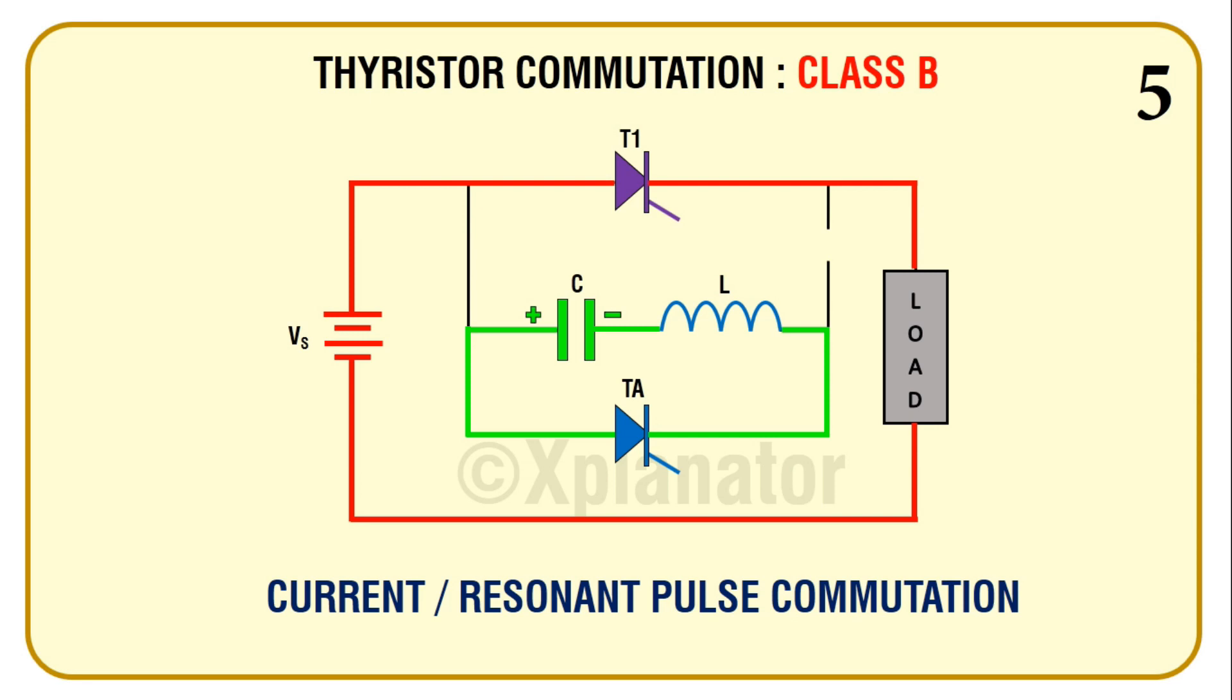The capacitor will go from voltage Vs to 0 to minus Vs. A video on how series LC circuit behaves with a DC battery has already been done. Do check it out in the link given in description below. So the capacitor charges to a value minus Vs.